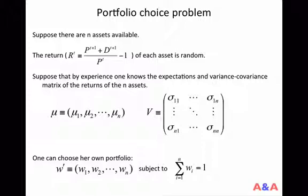What investor can choose is the portfolio weights, which we denote by W. So W is a vector of weights. The first number is the proportion of money to be invested in the first asset. The second number is the proportion of money invested in the second asset and so on. So there are N numbers here. And of course these weights, W's, should sum up to 1.